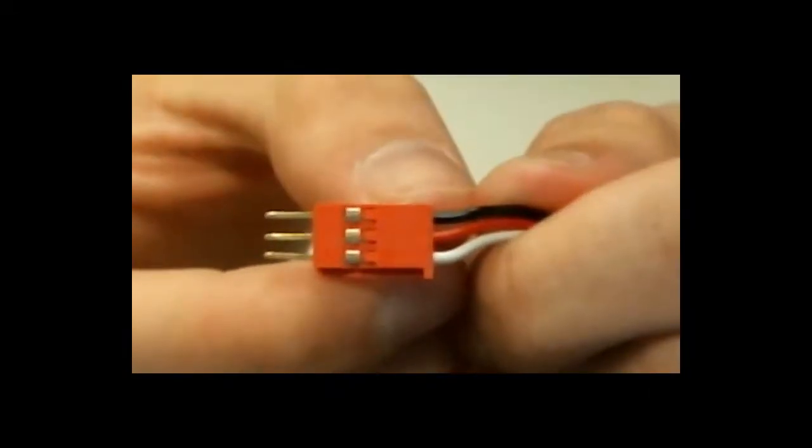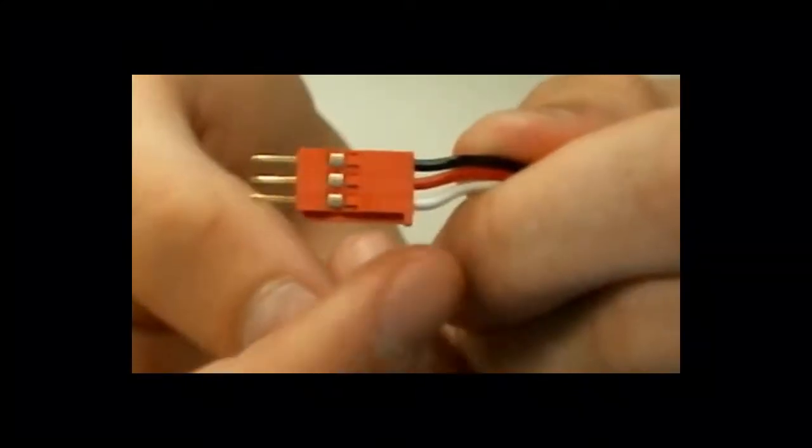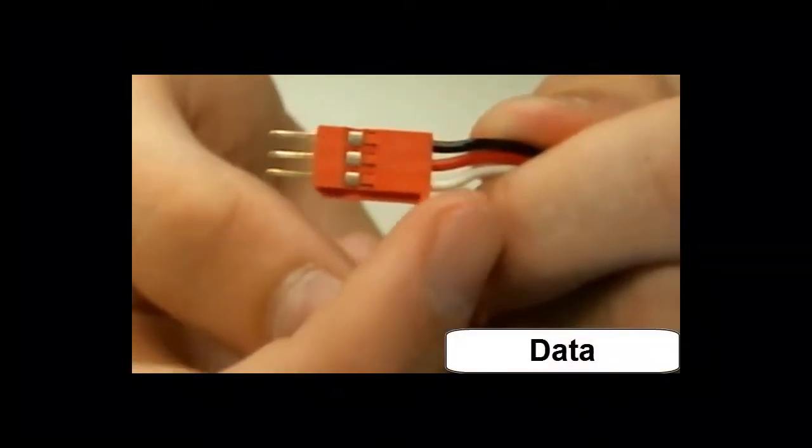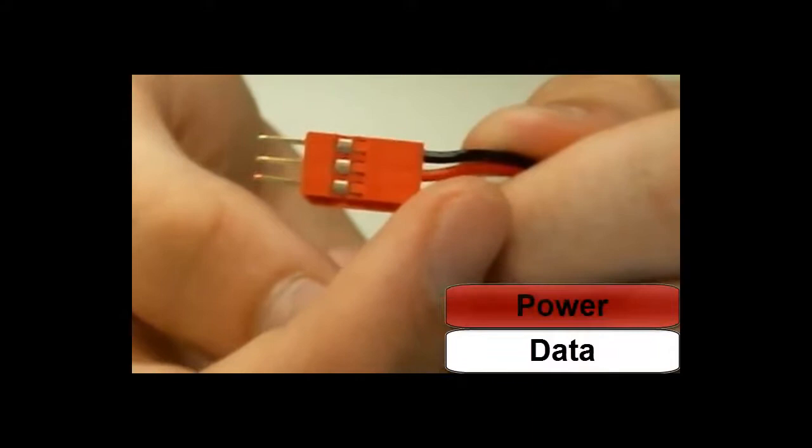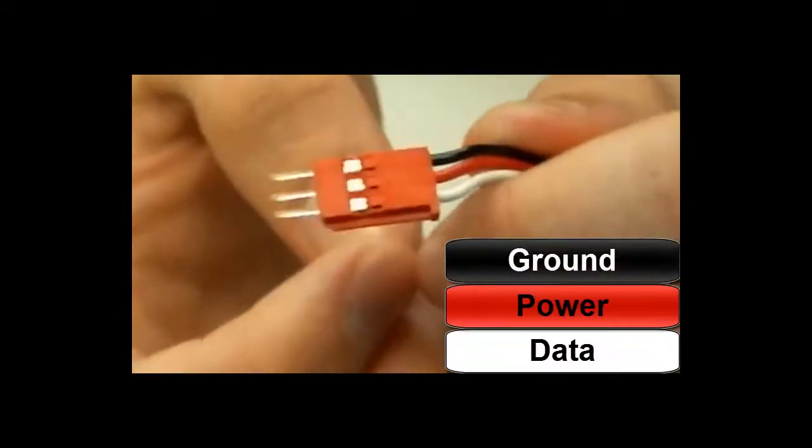Alright, so your bumper switch uses a standard PWM cable. It's a three-wire cable that has the white one on the bottom for your data, the red one in the center for your power, and the black one on top for your ground.